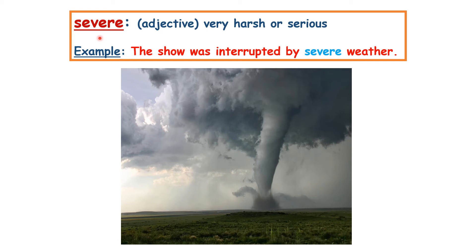Severe. It's an adjective — it describes a noun. In this picture, we see a tornado. If somehow there was a show going to happen outdoors, would they proceed or launch the show? Never, because there would be a huge disaster. The show was interrupted by severe weather. This weather is not comfortable or pleasant to be outside in. Severe means very harsh or serious.